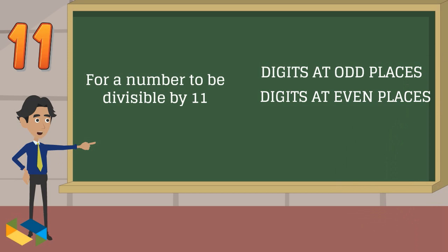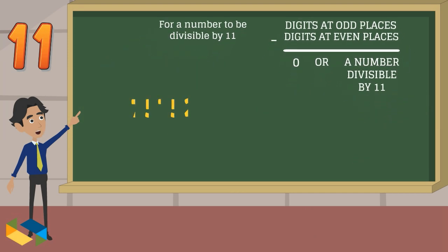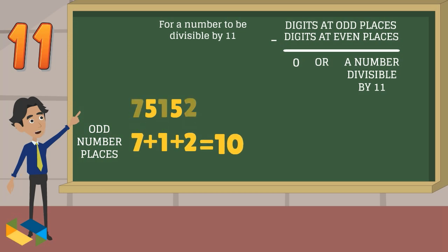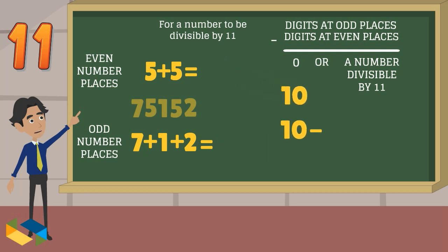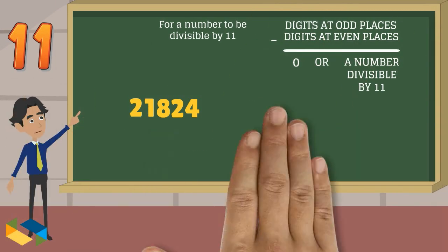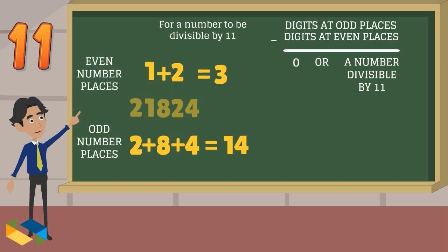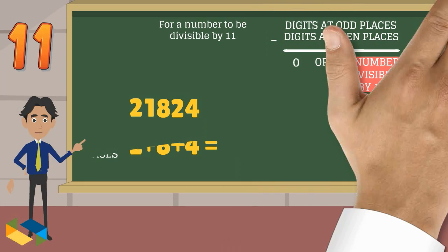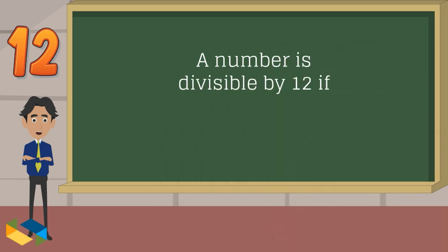The rule for 11 is remarkable: add all the digits in the odd number places, then add all the digits in the even number places, and subtract the results. If the result is 0 or divisible by 11, then the entire number is divisible by 11. In 75,152, the odd-place digits sum to 10 and the even-place digits also sum to 10; subtracting gives 0, so 75,152 is divisible by 11. In 21,824, the odd-place digits sum to 14 and the even-place digits sum to 3; the difference is 11, so 21,824 is also divisible by 11.